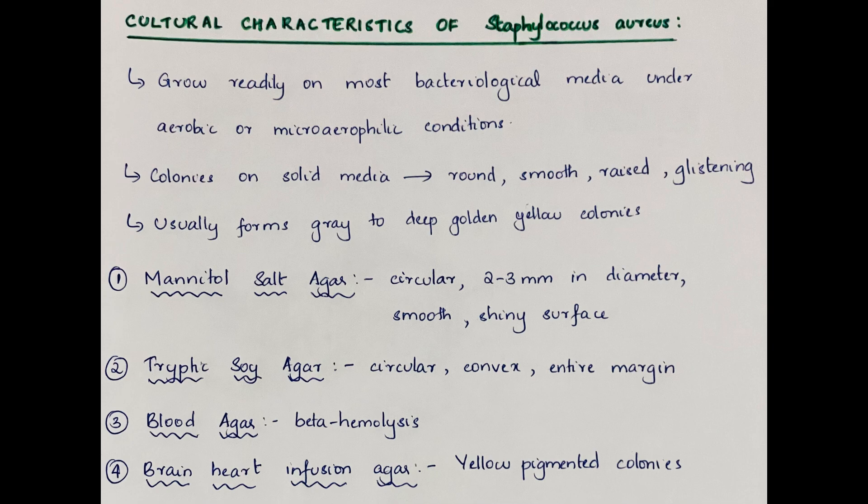On mannitol salt agar, the colonies are circular 2 to 3 millimeters in diameter with a smooth shiny surface and appear opaque and pigmented golden yellow. On tryptic soy agar, colonies are circular, convex with entire margin. On blood agar, they show beta hemolysis and on brain heart infusion agar, yellow pigmented colonies are found.